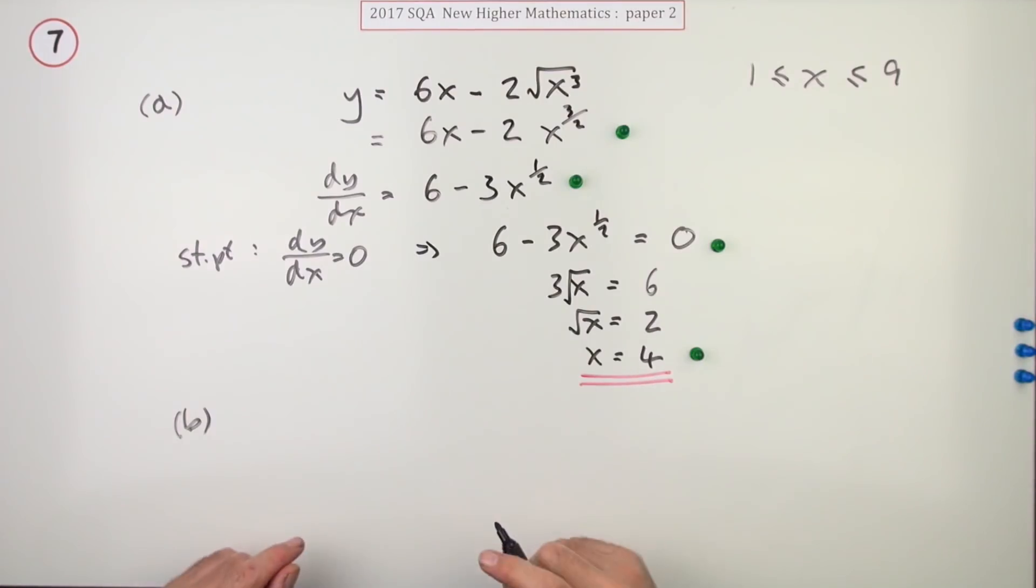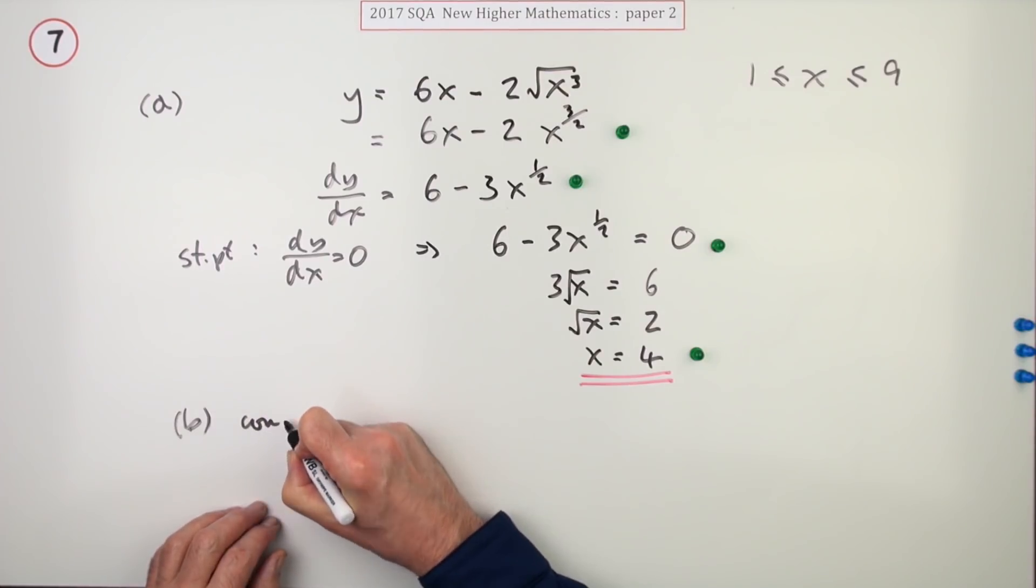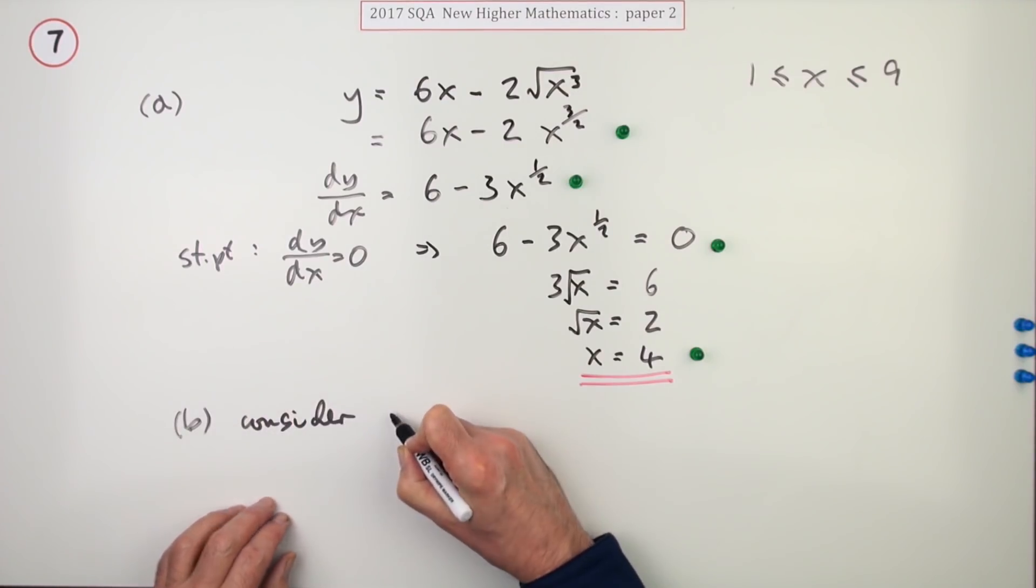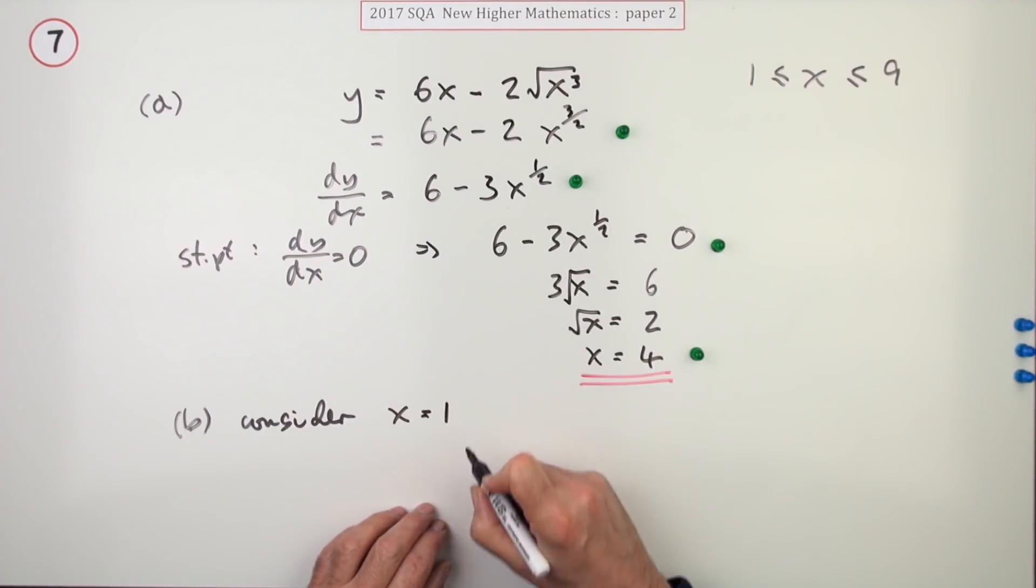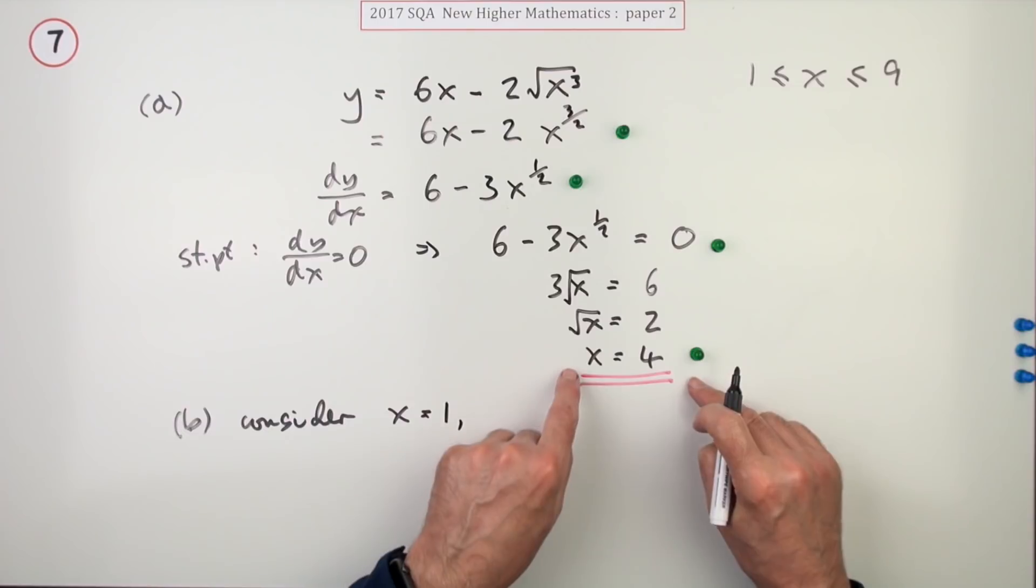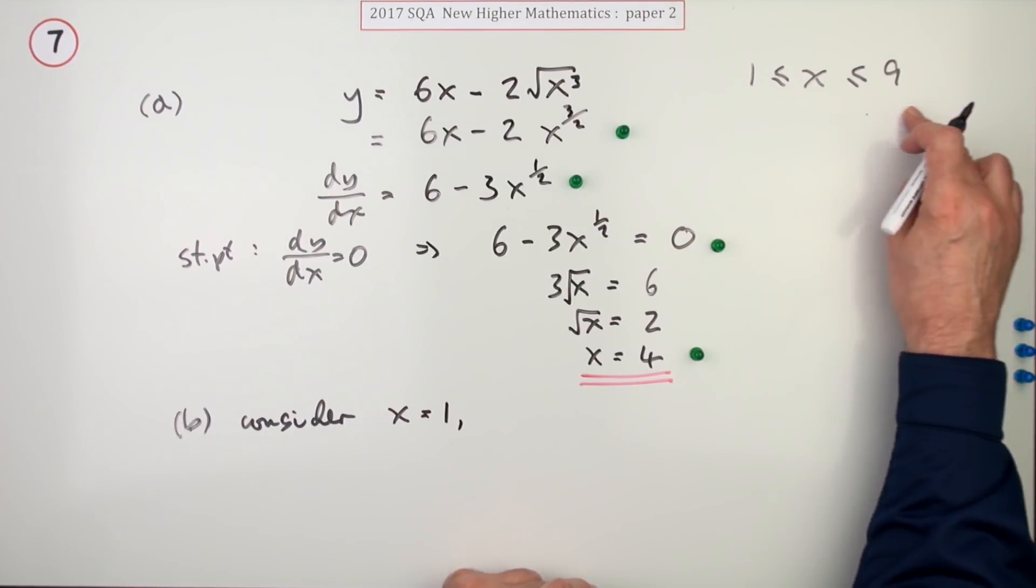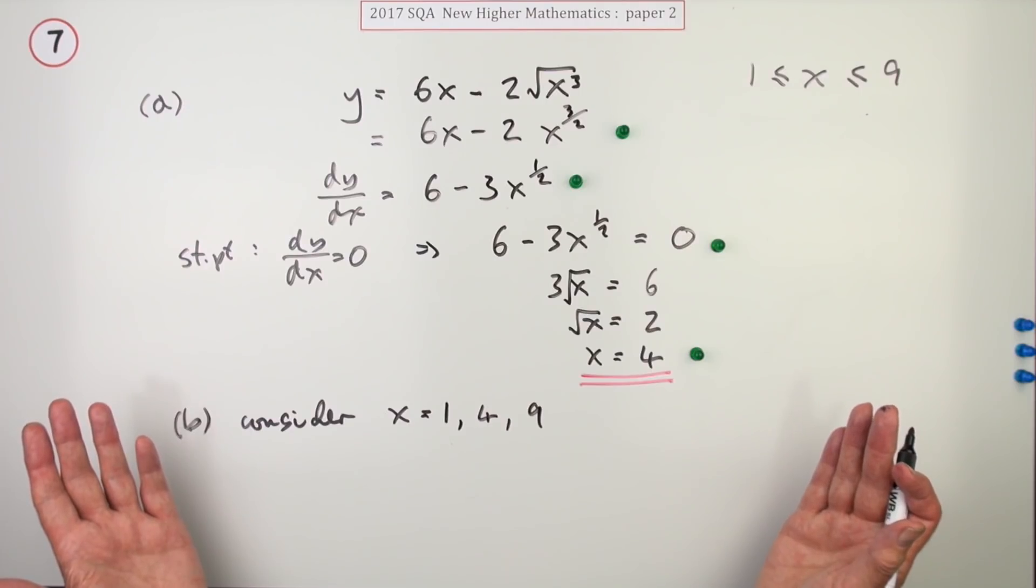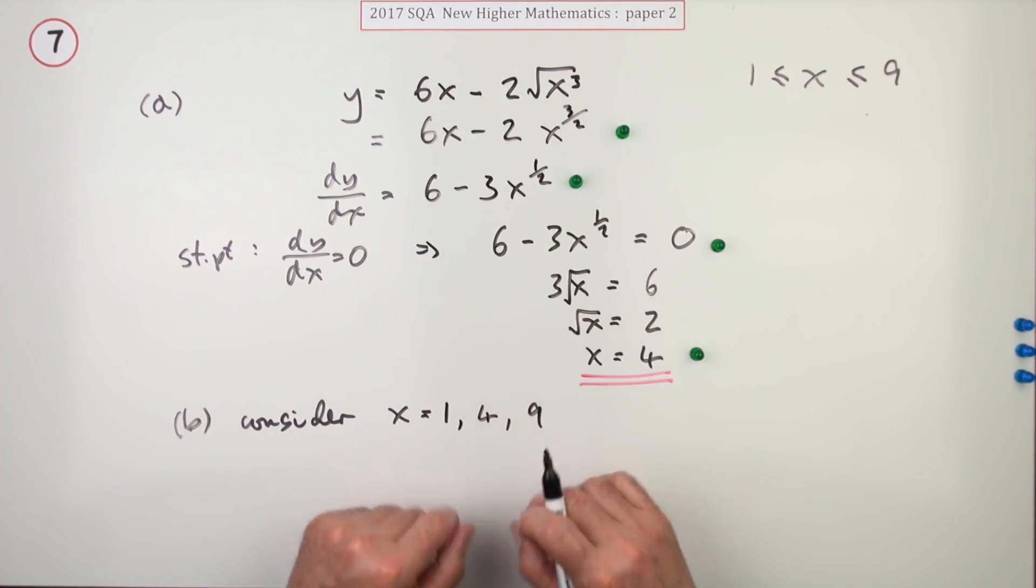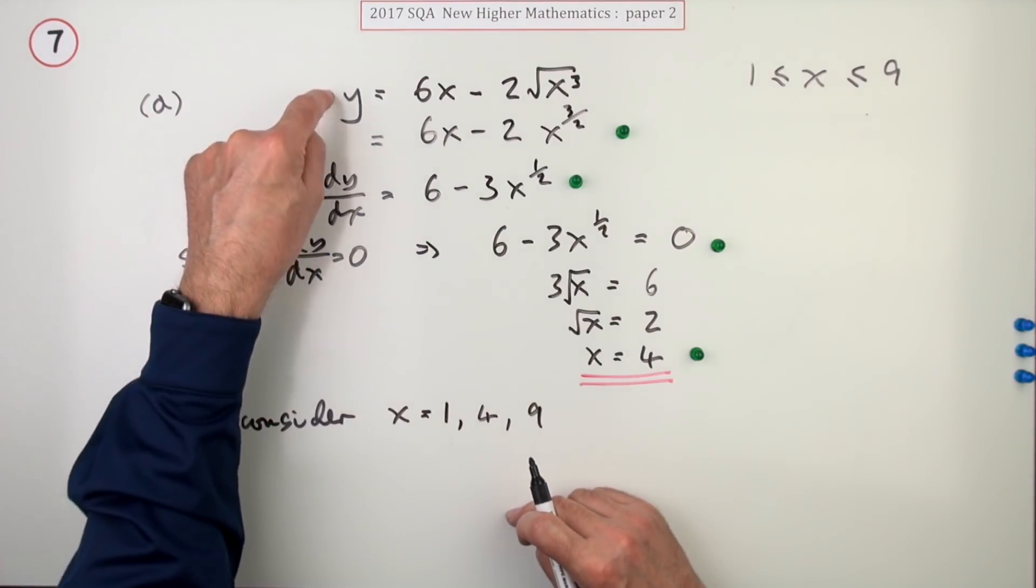That just means there are three candidates here for the maximum minimum. The ones you've got to consider are the primary candidates which are one and nine, plus any stationary value that happens to lie inside that window, in that interval, which in this case is just the four.